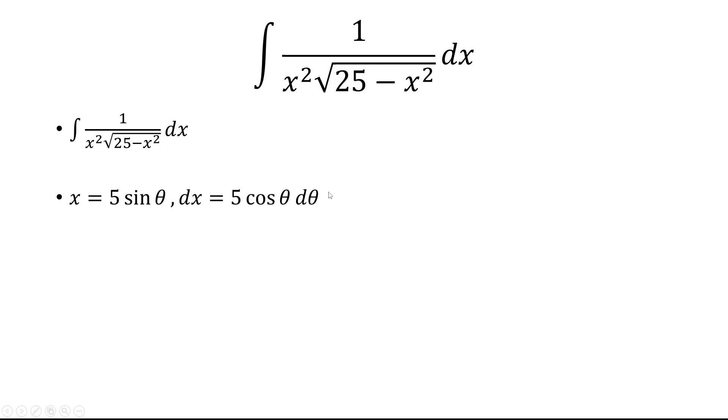First, we're going to use trig substitution, and we're going to let x equal 5 times sine theta. So dx is 5 cosine theta d theta.